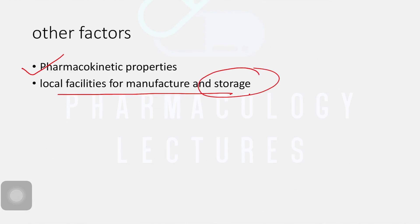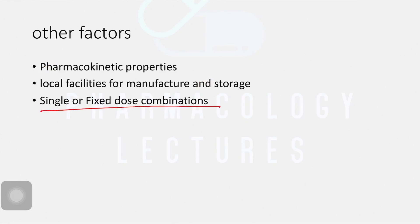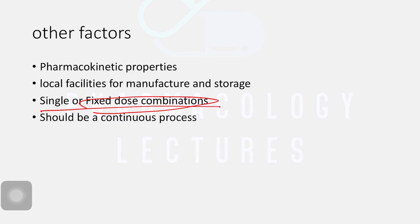You should also consider local facilities for manufacturing and storage. Next, consider whether it is a single drug or a fixed-dose combination, since many drugs are available as fixed-dose combinations — for example, paracetamol and ibuprofen combined in a single formulation. Choosing and updating the essential medicine list is a continuous process, because conditions change over time and new information about adverse drug reactions may require removing a drug from the list.